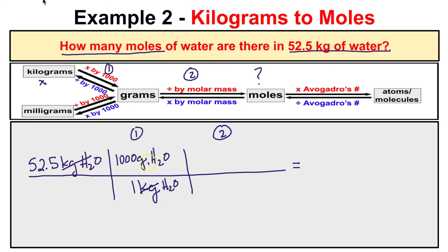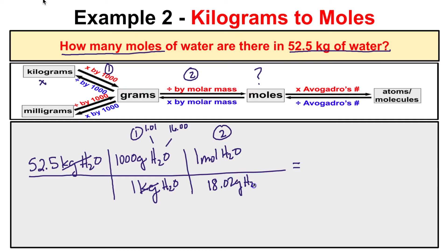In the next step we convert those grams of H₂O to moles of H₂O by dividing by the molar mass of water. From the periodic table, the molar mass of oxygen is 16.00 and the molar mass of hydrogen is 1.01. Taking two times 1.01 and adding 16 gives us a molar mass of 18.02. So one mole of H₂O equals 18.02 grams of H₂O. We plug into the calculator: 52.5 times 1,000 divided by 18.02.